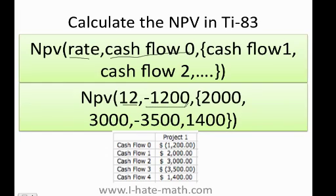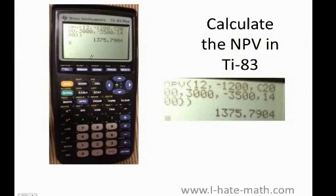Here I put negative 1200. Important: if you don't have any cash flow zero, just put zero. You need to make sure you tell the calculator that your cash flow zero is either zero or another value — in our case it's negative. Now put a comma, then the opening curly brace, and enter all the cash flows: cash flow one, two, three, and four. Then finish with the closing curly brace, and finally the closing parenthesis. On the TI-83, any time you open a parenthesis you must close it, and same for curly braces. Don't forget your commas.